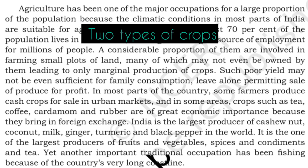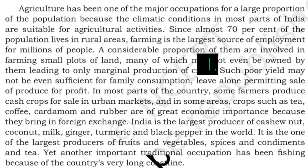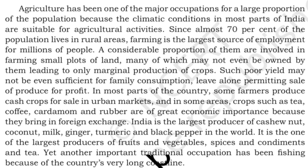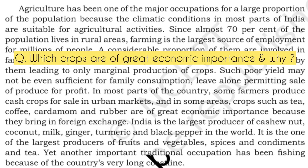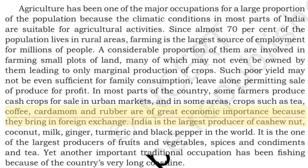There are two types of farmers. The first type are those who are not very rich — they have a smaller piece of land or cannot afford good machines or laborers, so they only grow enough to feed themselves and their family. The second type of farmers grow crops for selling in the markets, such as tea, coffee, cardamom, and rubber.